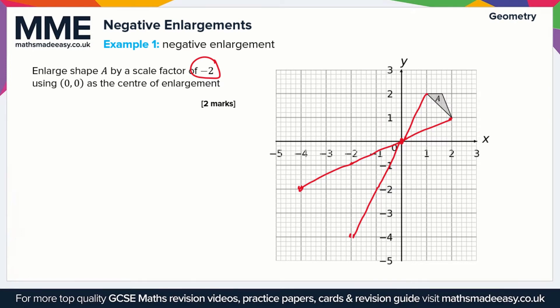This last corner is a little tricky — it's about 1.6 squares across, so call it one and a half squares across from the center of enlargement, and two up. So we go two down and about one and a half across, then two down and about one and a half across again, and we should end up roughly at the new point. Our new shape will look something like this.